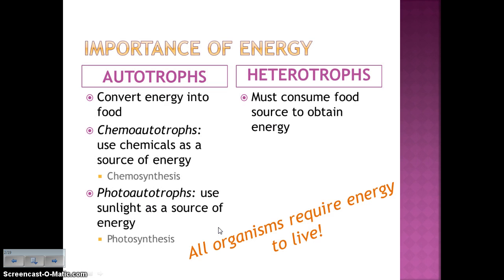All organisms require energy to live. I want to reintroduce these terms: autotrophs and heterotrophs. We know that autotrophs are able to make their own food by converting energy. There are two types of autotrophs: chemoautotrophs, which use chemicals as a source of energy to make their own food through chemosynthesis, and photoautotrophs, which use photosynthesis, using sunlight as a source of energy to make their own food. Heterotrophs, like us, have to consume food and then break it down in order to obtain energy.